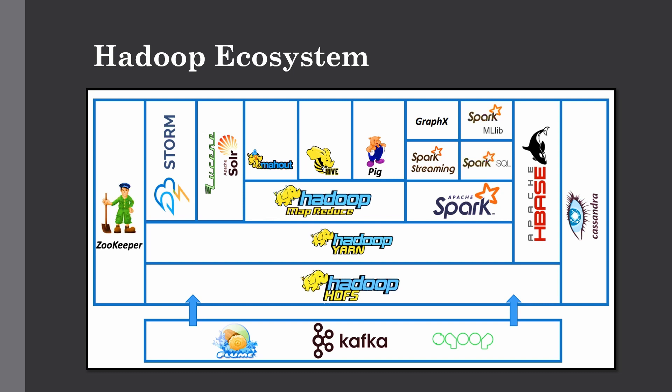Without further ado, let's get into it. As you can see in this figure, these are all the components which work together for storing, processing, and analysis of big data, and we are going to discuss them one by one. Here you can also notice some Hadoop core components such as HDFS, Yarn, and MapReduce that we have already discussed in detail in a previous lecture.